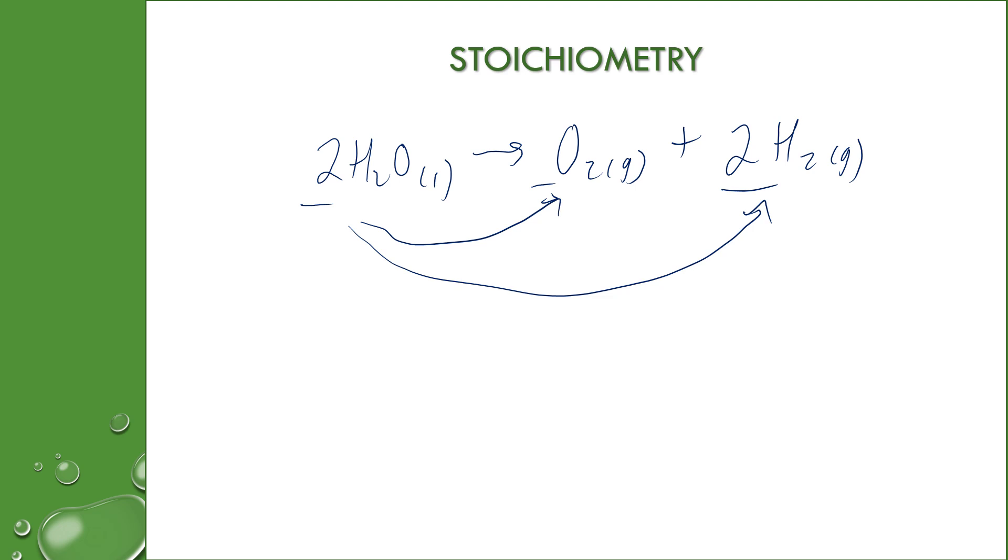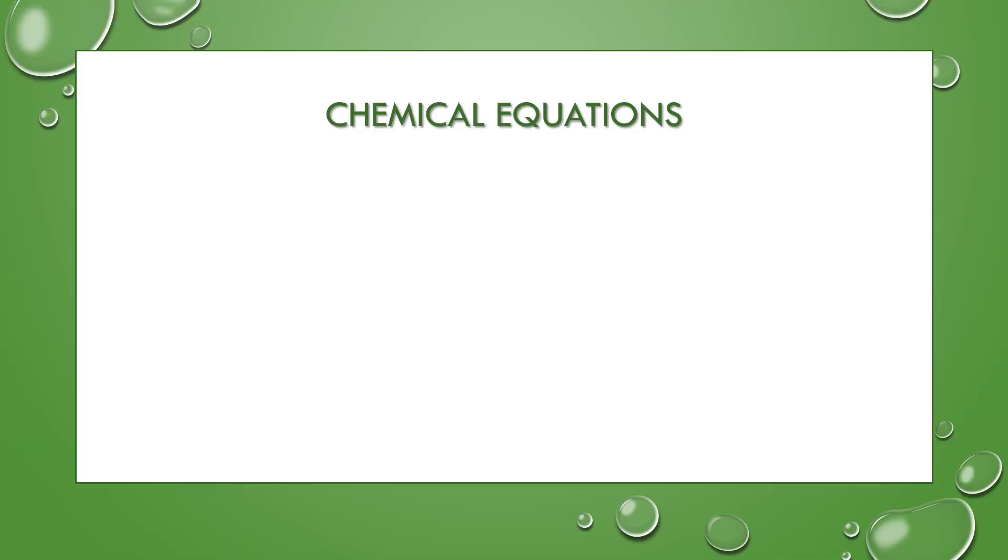We're going to look at a couple different examples, but the first thing that we want to really get into is the chemical reactions and the actual writing of the equations themselves. So let's talk chemical equations. You always put reactants on the left, products on the right. A reversible reaction will have two arrows. If it's reversible, you'll see this double arrow.